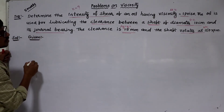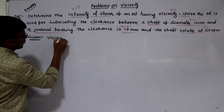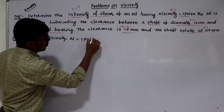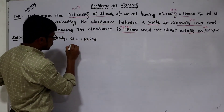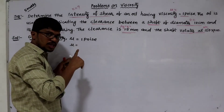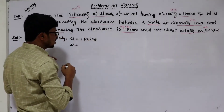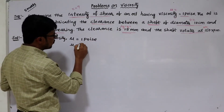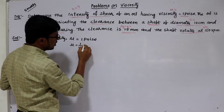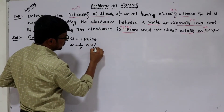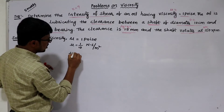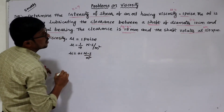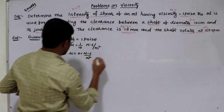The given data: viscosity is denoted by mu. I need to convert it to SI units. As already covered in the viscosity topic, the conversion from CGS to SI gives mu equal to 0.1 Newton-second per meter square. Then the shaft diameter is given.